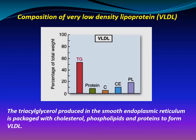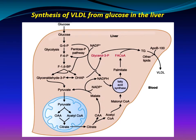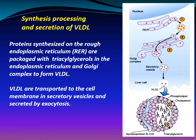Composition of VLDL: the triacylglycerol produced in the smooth endoplasmic reticulum is packaged with cholesterol, phospholipids, and proteins to form VLDL. Glycerol-3-phosphate is derived from the glycolytic pathway, and fatty acyl-CoA is derived from the fatty acid biosynthetic pathway; they combine to synthesize triacylglycerol, which is assembled as VLDL and secreted into the blood. Proteins synthesized on the rough endoplasmic reticulum are packaged with triacylglycerol in the endoplasmic reticulum and Golgi complex to form VLDL, which is transported to the cell membrane in secretory vesicles and secreted by exocytosis.